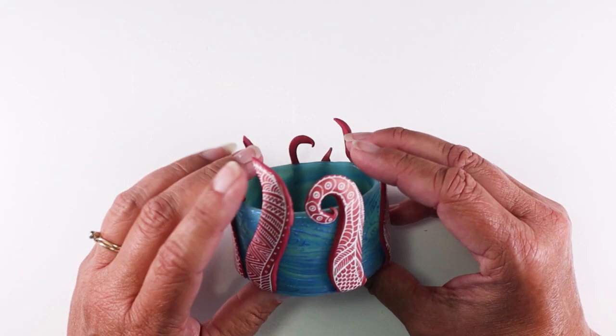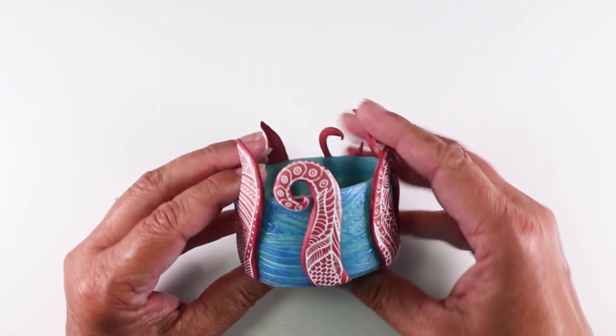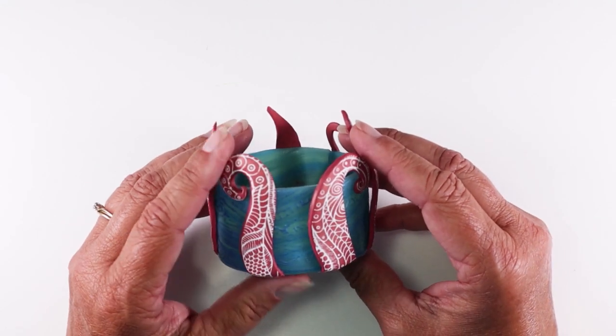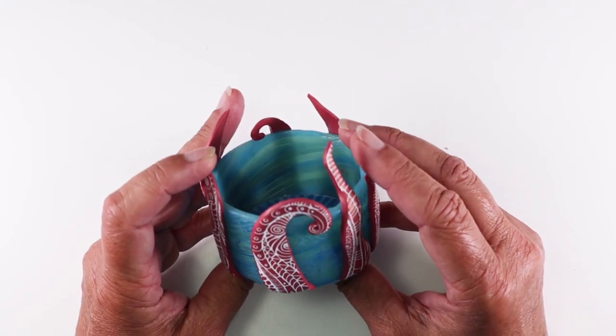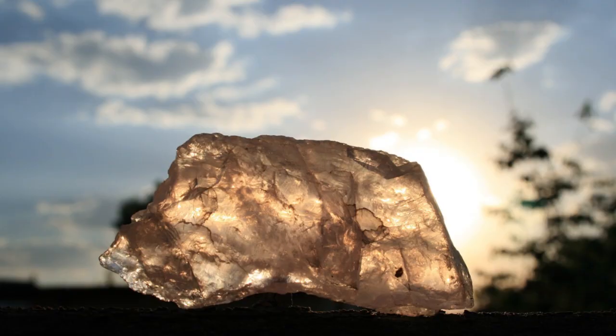We are going to start this project by making the walls of the tea light, which are going to be made out of translucent clay. Translucent clay you say? Yeah, when I was first new to clay, learning that it came in translucent blew my mind.